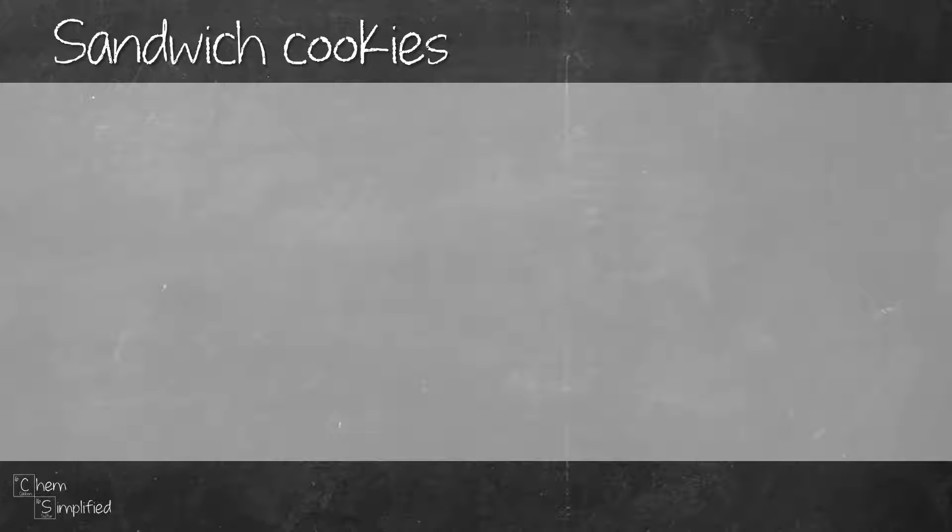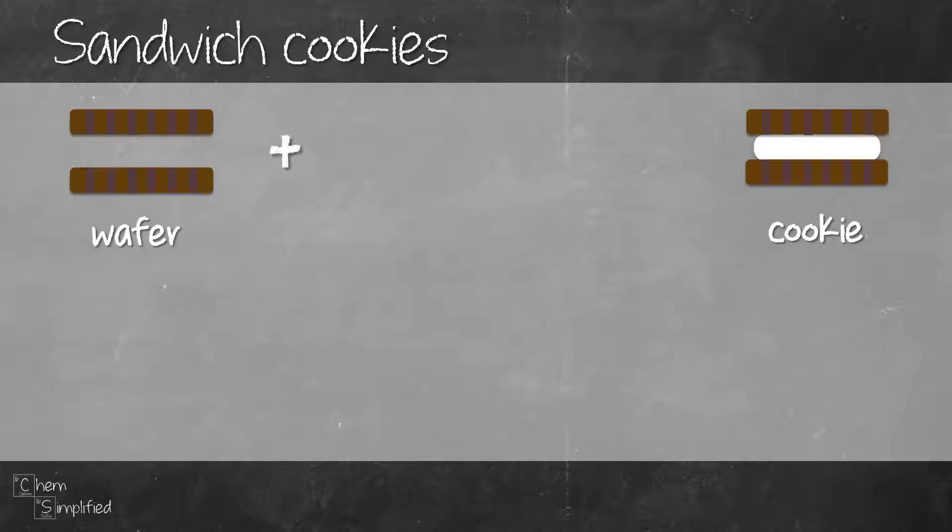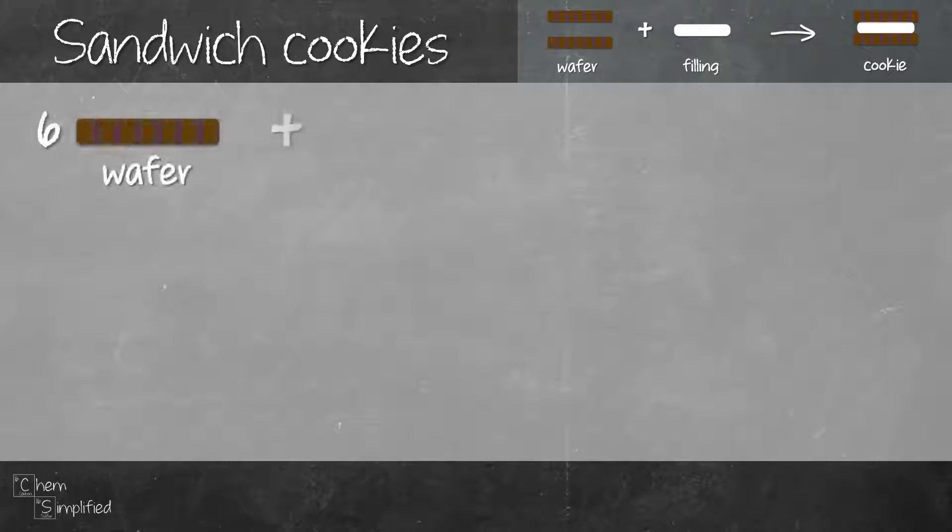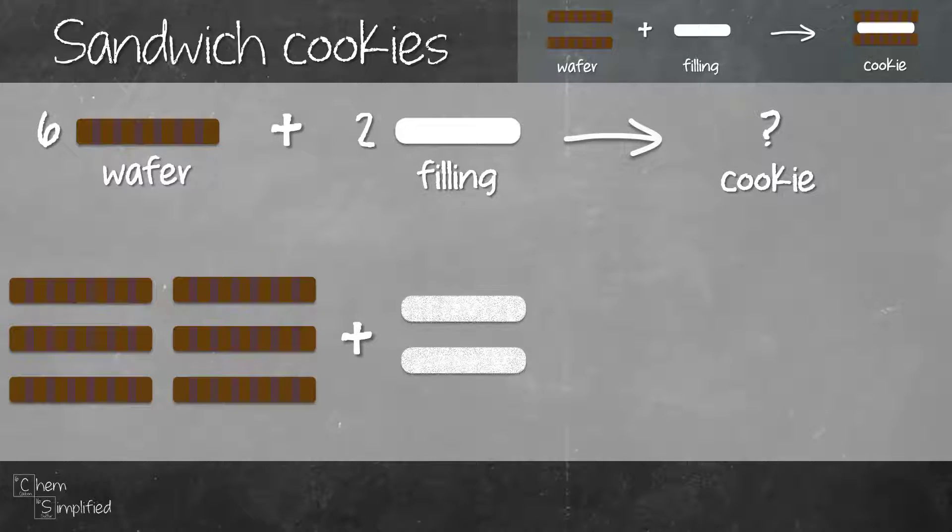Let's say we want to make sandwich cookies. To make one sandwich cookie, we need two pieces of wafer and one piece of filling. If we have six pieces of wafer and two pieces of filling, how many cookies can we make?